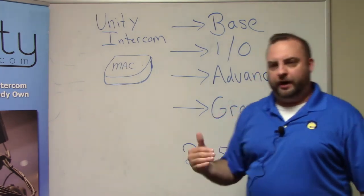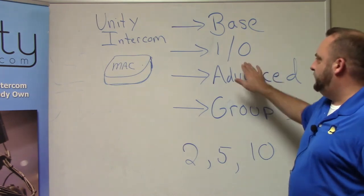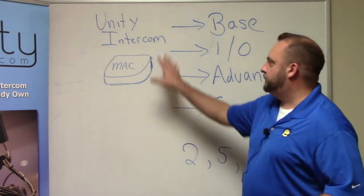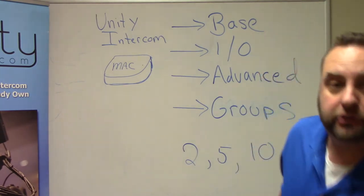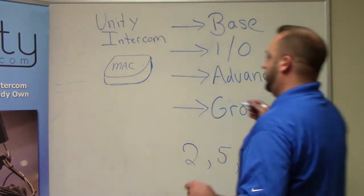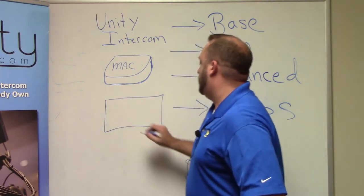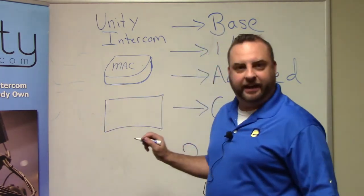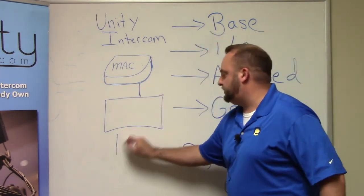The second most common item is the I.O. license. That's the ability for Unity Intercom server to interact with an external I.O. device. For example, a lot of times you might have like a MOTU or a Tascam device hooked to the Mac computer that's receiving a couple of, you know, six, eight, 32 audio feeds.